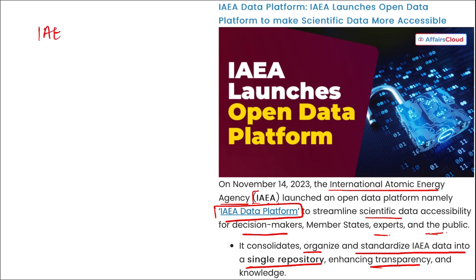Regarding IAEA: Director General is Rafael Mariano Grossi, headquarter is in Vienna, Austria, and it was established in 1957.